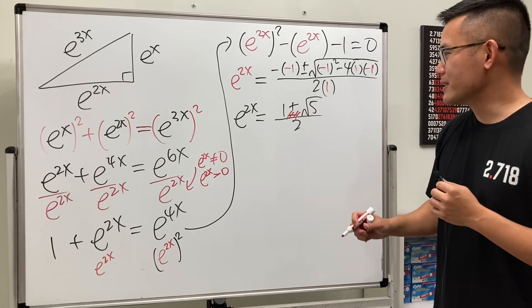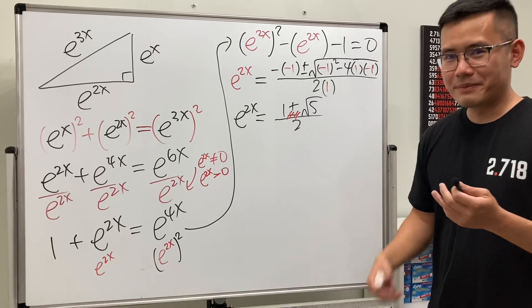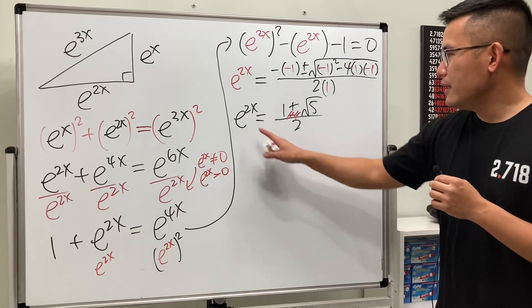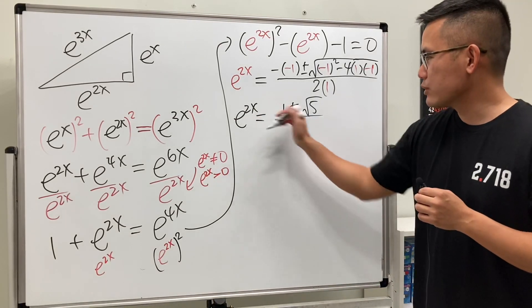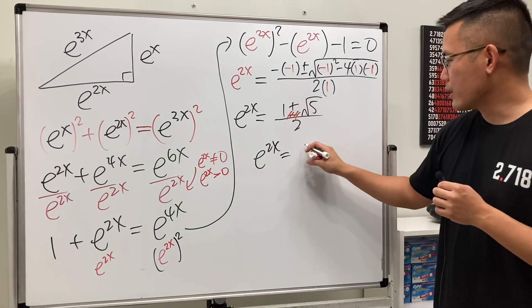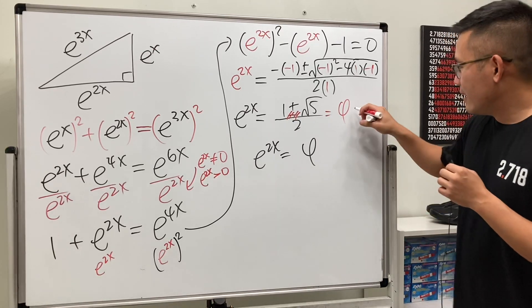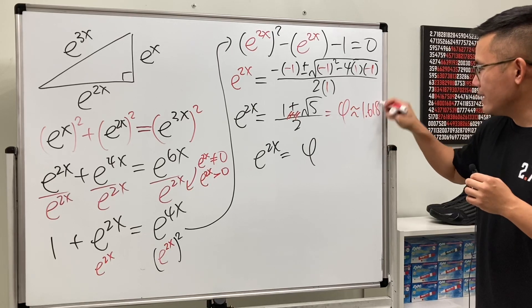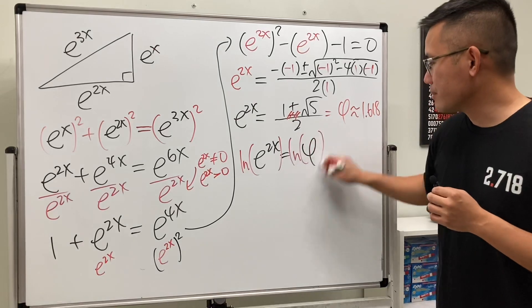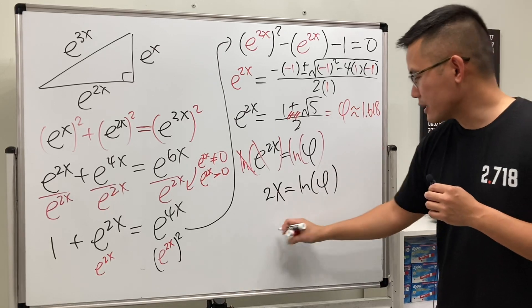So in fact we have e to the 2x—oh man, I should put down my golden ratio t-shirt, but no—let's just look at e, e to the 2x is equal to this. So in fact we can just take the natural log on both sides, right? Because we have e to the 2x equals—let's put this as the golden ratio, why not? Just notice this is the golden ratio. Honorable mention, this is approximately 1.618. All right, and then let's just go ahead and take the natural log on both sides, cancel this, and then we have 2x equal to ln φ, and then divide both sides by 2.